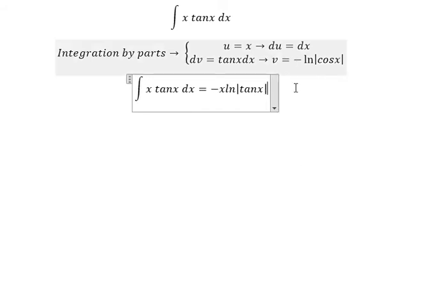So we need to put this in. We have u multiplied with v. That's x multiplied with negative ln of absolute cosine x. Because we have the negative, we get the positive in here.